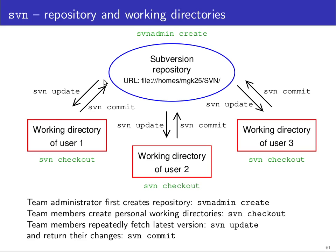The opposite operation — getting a version from the repository into your working directory — is called an SVN update, not a checkout like in RCS. The checkout verb is also used in subversion, but it is only used to create the initial copy of your working directory before you start. There is also an SVN admin command used to manage the repository. The main command you need is to first create a repository with SVN admin create at some explicit location — this may be on a remote server or a shared file server directory where every team member has write access — and after the repository is created, every team member can do a checkout and then start making commits and updates.